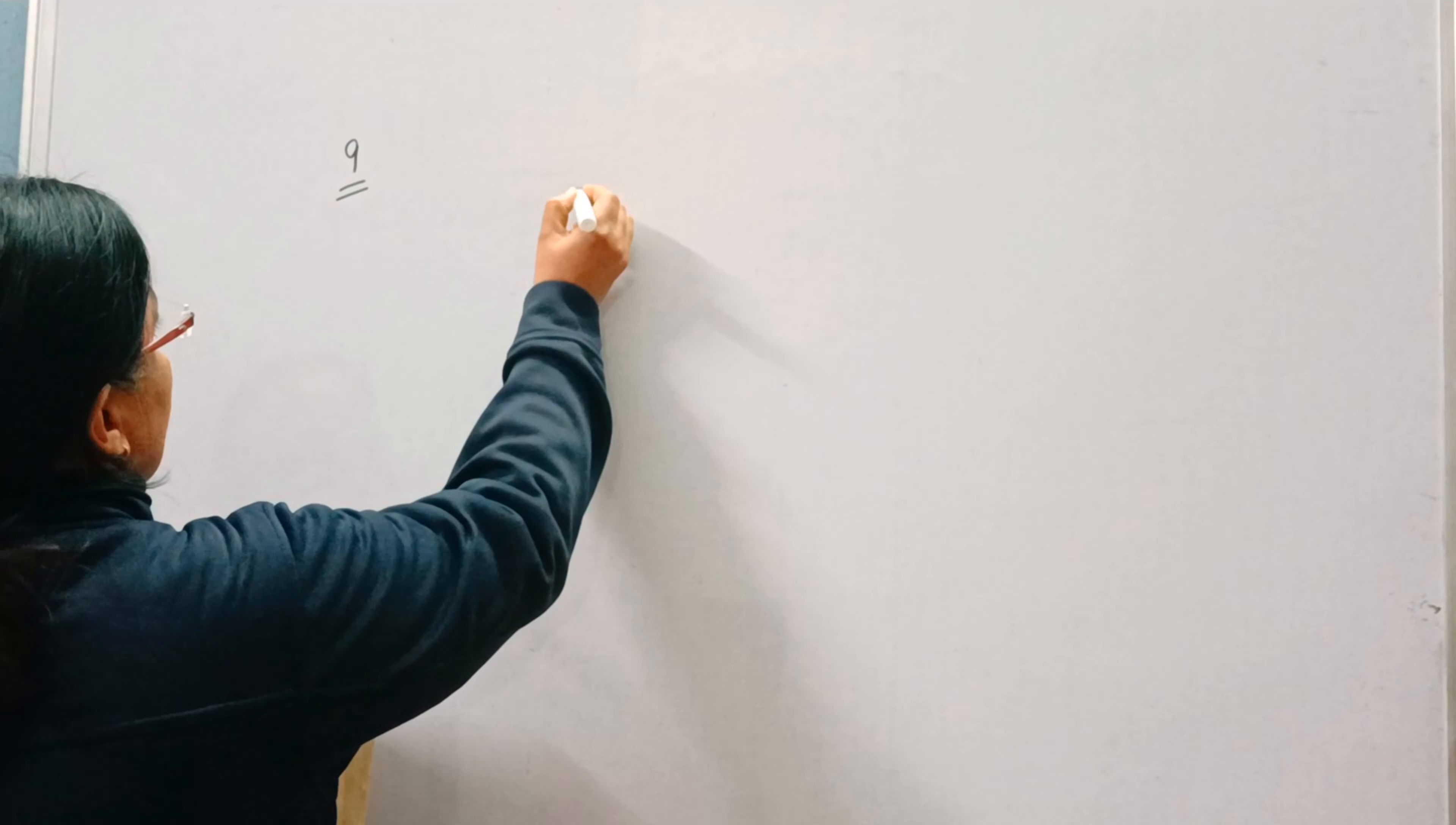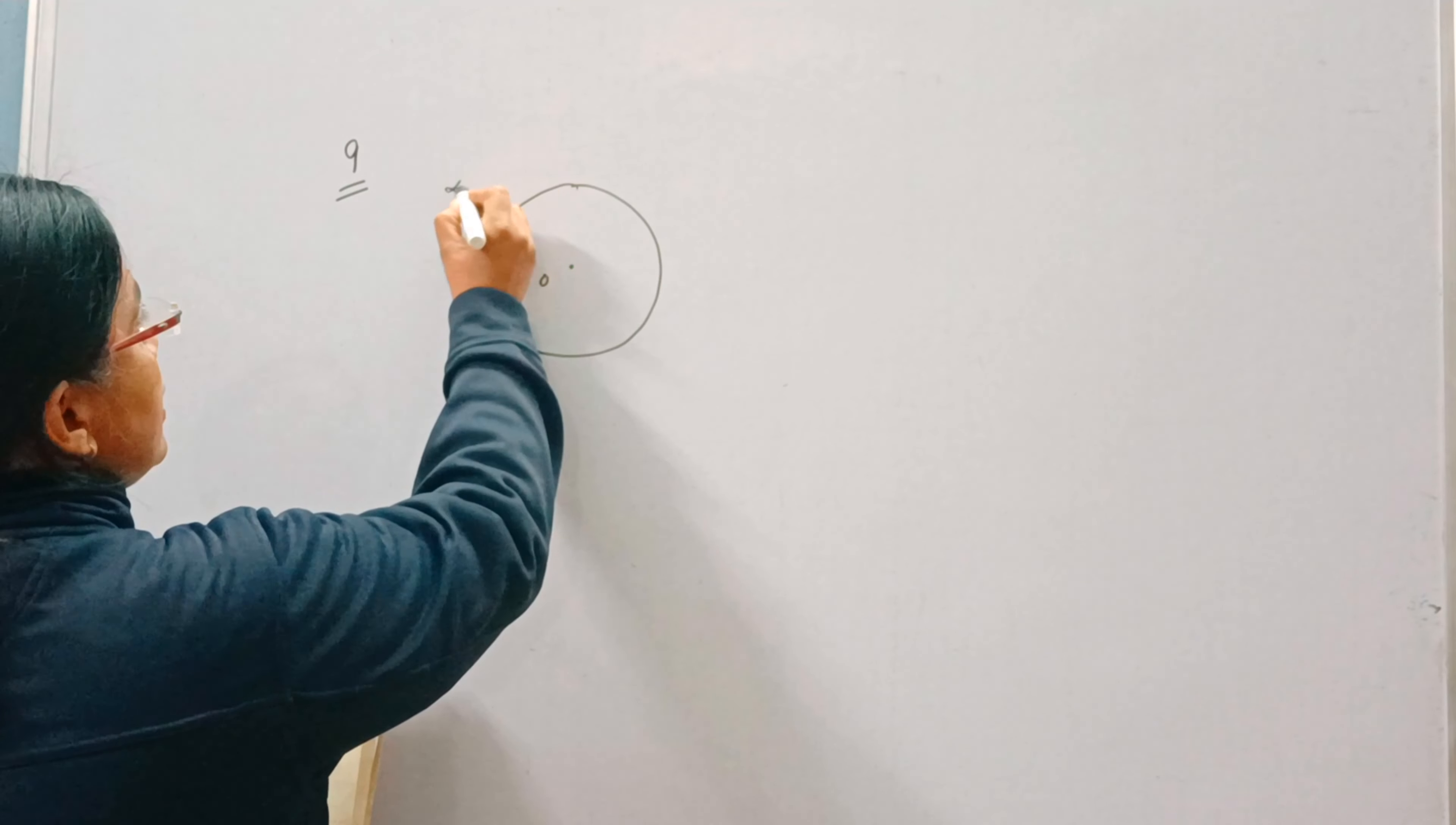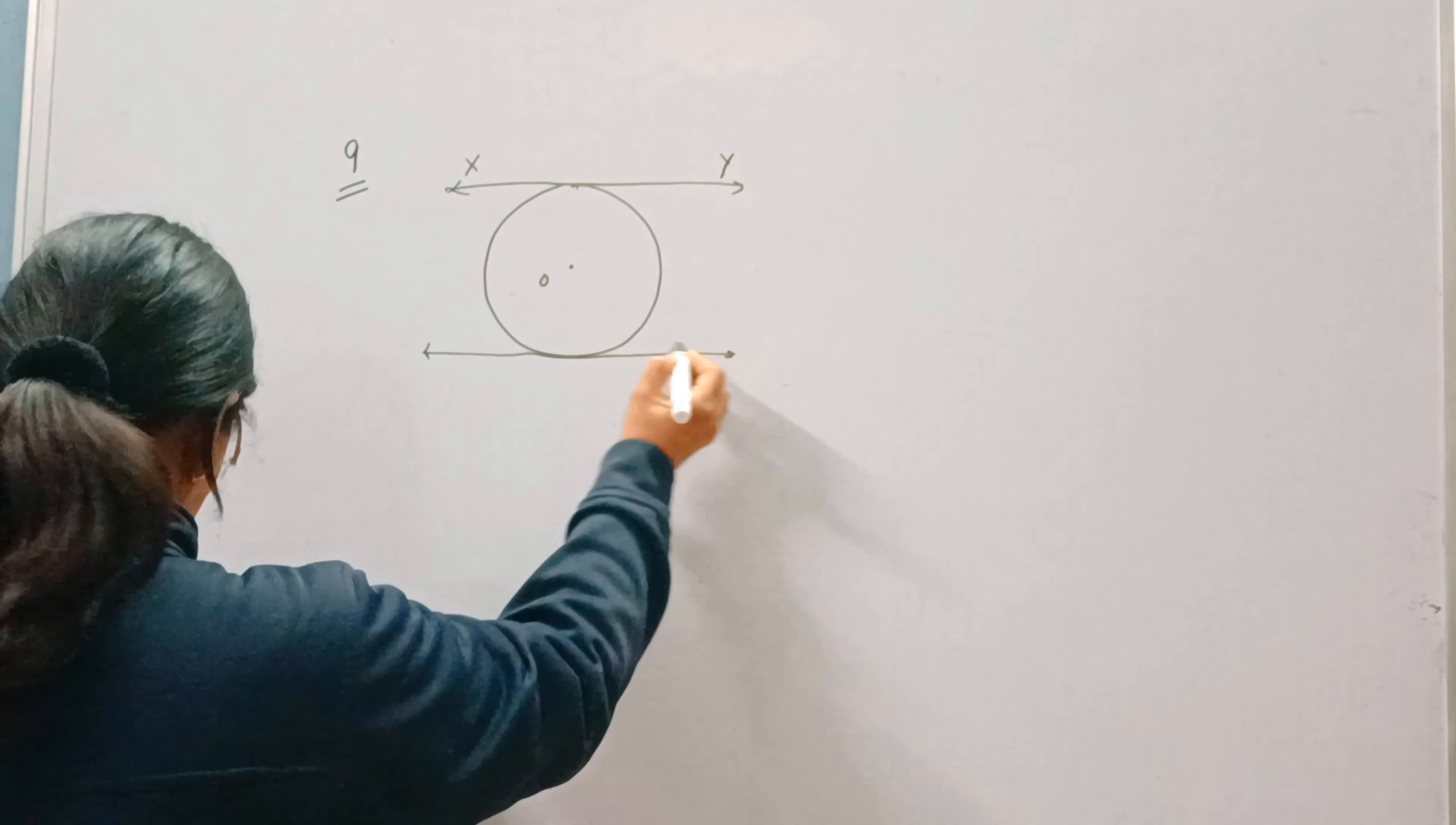So a circle is given with center o and the two parallel tangents are given xy and x dash y dash. These are the two parallel tangents to a circle with center o.